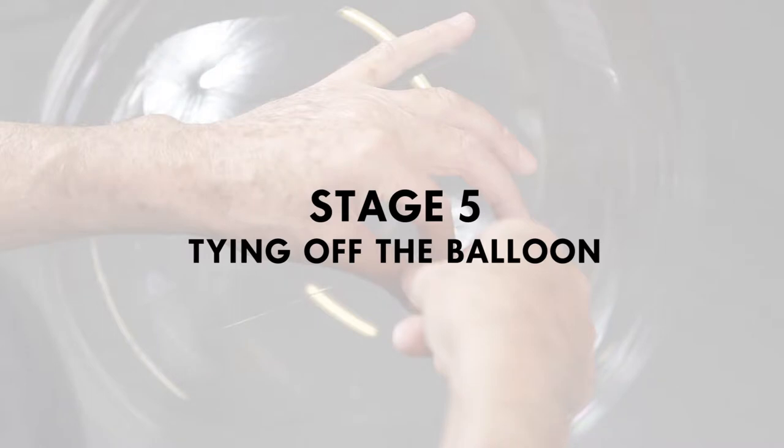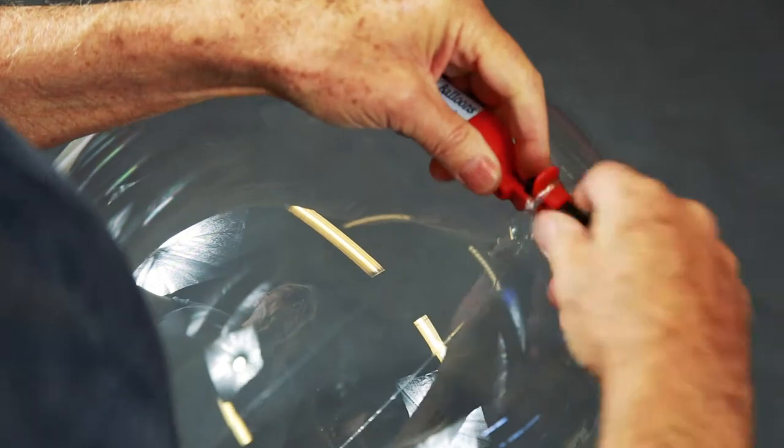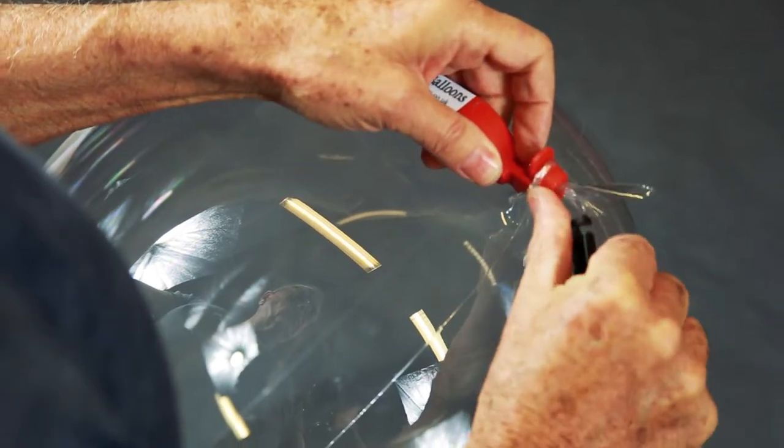Stage 5 is tying off the balloon. Twist the balloon neck a number of times to keep the pressure of the balloon and tie off the neck with a simple knot. Check that the knot is tight otherwise helium may escape.